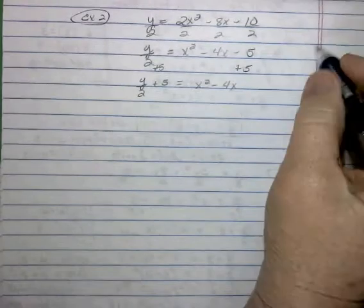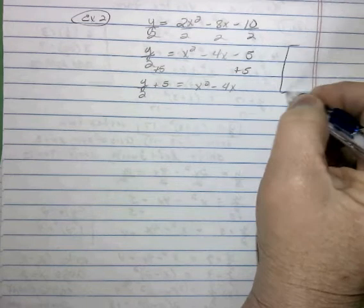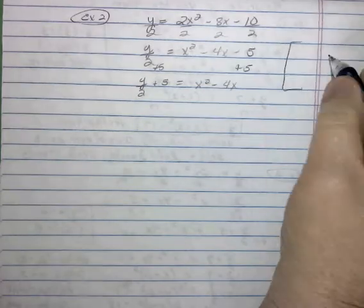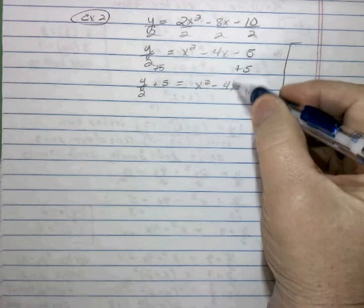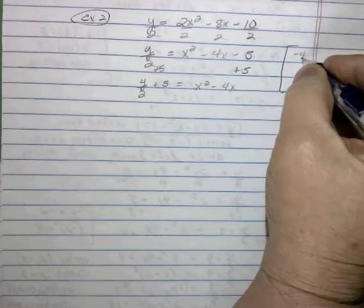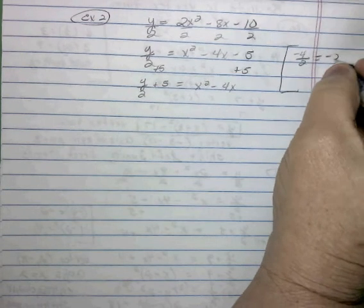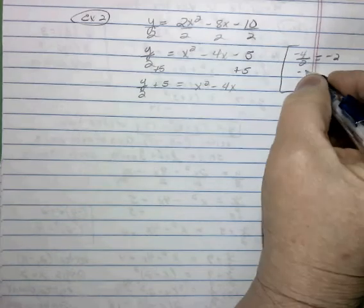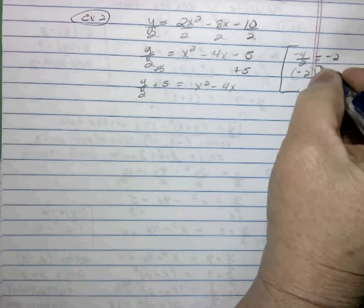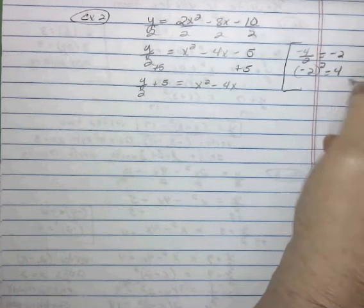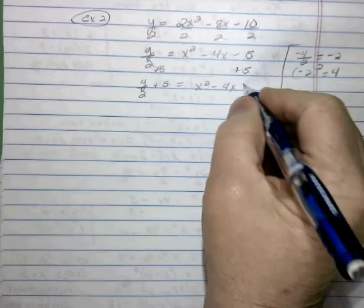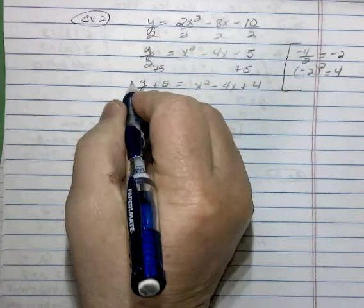Now, over to the side, we're going to use our thinking caps to think of our process. We're taking the coefficient of the x term, negative 4. We're taking half of that, which is negative 2. We're going to take the negative 2 and square it. So we get 4. And so we're going to add 4 to both sides of our equation.